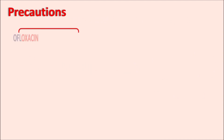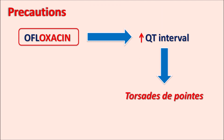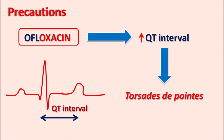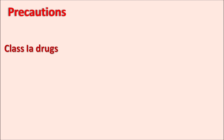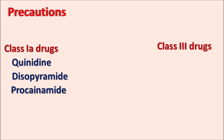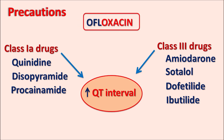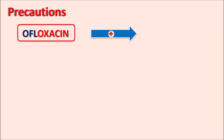What are the precautions? Ofloxacin can increase the QT interval on the ECG, potentially precipitating torsades de pointes — a fatal cardiac arrhythmia. Drugs like class 1a antiarrhythmics (quinidine, disopyramide, procainamide) and class 3 antiarrhythmics (amiodarone, sotalol, dofetilide, ibutilide) block voltage-gated potassium channels and also increase the QT interval. Therefore, ofloxacin should not be combined with class 1a or class 3 antiarrhythmic drugs.